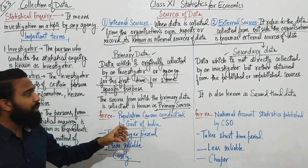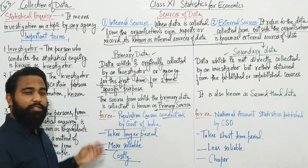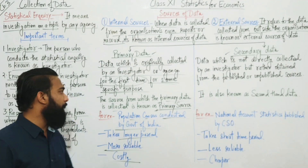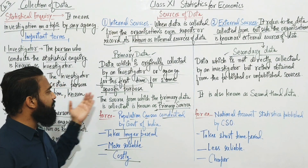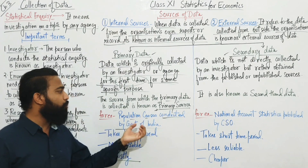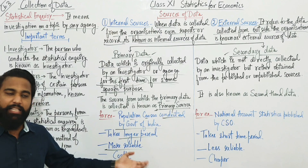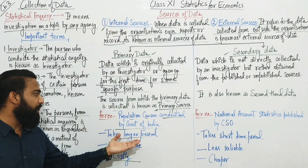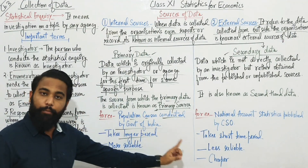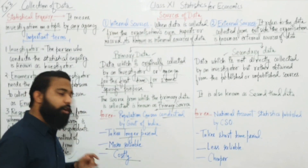So to summarize: primary data is originally collected by an investigator or agency for the first time for some specific purpose. The source from which primary data is collected is known as the primary source. For example, the population census is conducted by the government of India. It takes a longer period of time, it is more reliable, and it is costly.